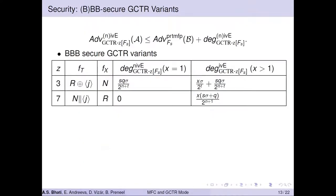Let me get a bit more technical to build up the stage for our formal results. The adversary advantage of breaking the NIVE security of a GCTR variant Z is upper bounded by two terms: the first refers to the PRDMFP security of the underlying multi-fork cipher, and the second is an additional degradation that comes from the GCTR mode itself. This degradation varies variant by variant.